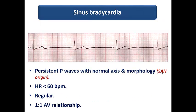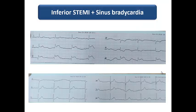The most common type of bradyarrhythmia is sinus bradycardia, seen in patients with myocardial ischemia. The heart rate is less than 60, with persistent P waves of normal axis and morphology, indicating origin from the SA node. A 12-lead ECG is needed to confirm. The rhythm is regular with a one-to-one AV relationship, since the problem is in the SA node, not the AV node. You may also see inferior STEMI with ST elevation in inferior leads and ST depression in leads I and aVL.